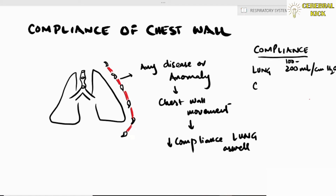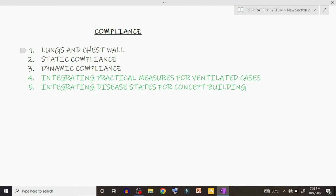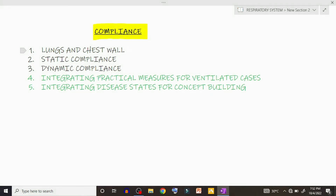Overall, where chest wall and lungs have almost equal compliance, the combined system compliance is always reduced to 100 ml per centimeter of water. In the next episode, we will apply these concepts of compliance to a spontaneously breathing patient and a patient on a mechanical ventilator. Stay tuned.